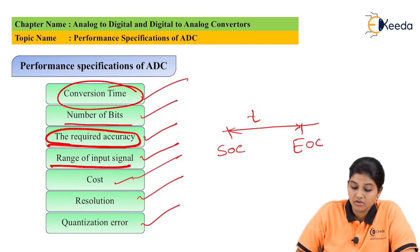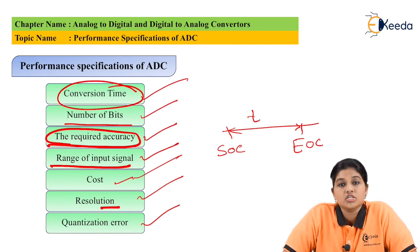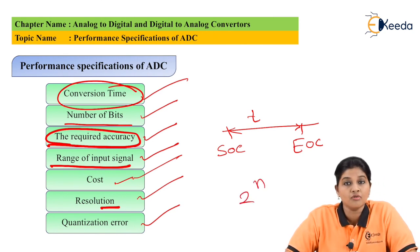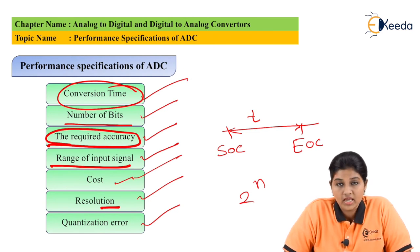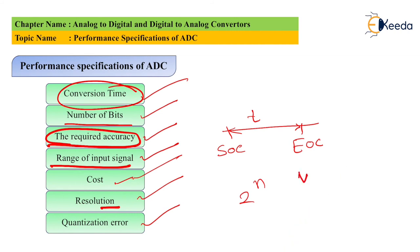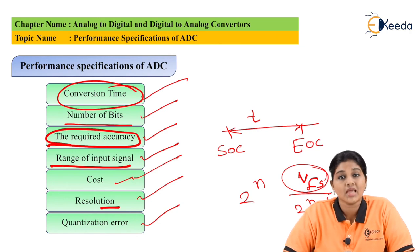The next parameter is resolution. Resolution is basically defined as the maximum number of digital output words, given by the formula 2^n, where n is the number of bits. It is also defined as the change in the value of analog input signal required to change the output digital word by 1 LSB, given by the formula VFS / (2^n − 1), where VFS is the full-scale voltage applied to the ADC. The resolution must be as high as possible.